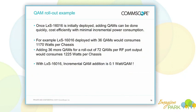A customer deploys 36 QAMs in a service group — pretty common right now — a mix of video on demand, switched digital video, and DOCSIS traffic. Based on one of our large tier-one customers, that would be 1,170 watts for that chassis across 16 service groups — about 2 watts per QAM. If we added another 36 QAMs, doubled the capacity — increased video on demand, DOCSIS, rolled out a new IPTV service — the incremental would be just an additional 0.1 watts per QAM.